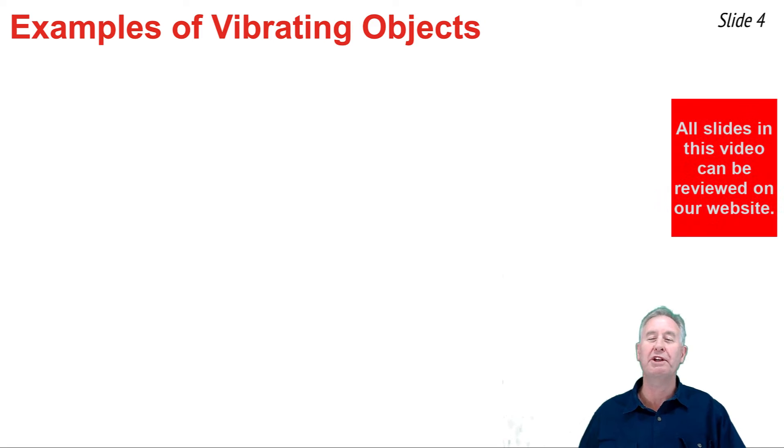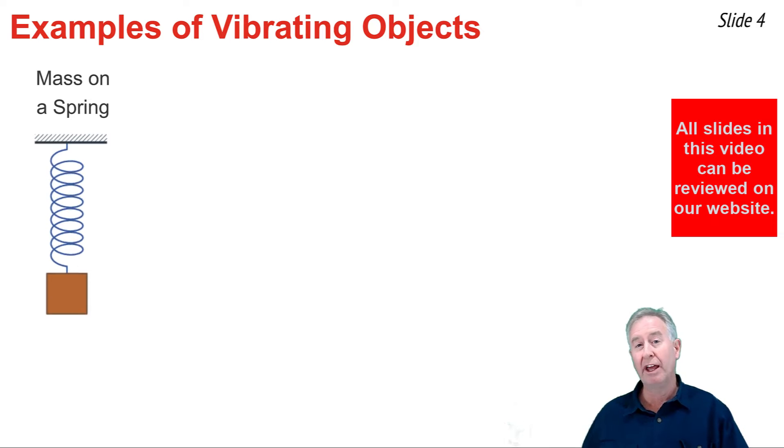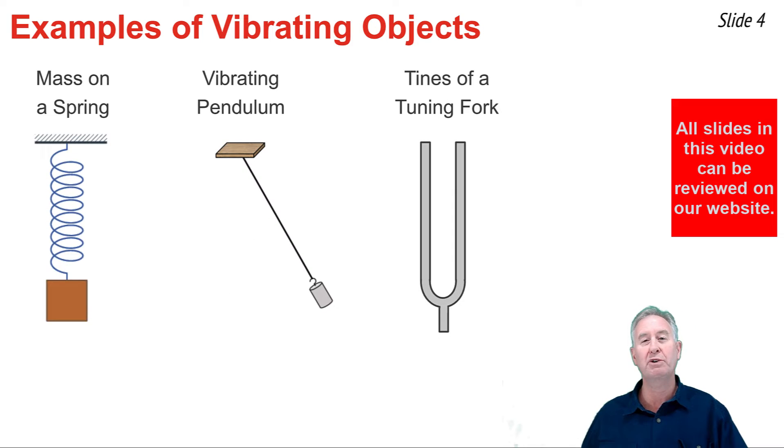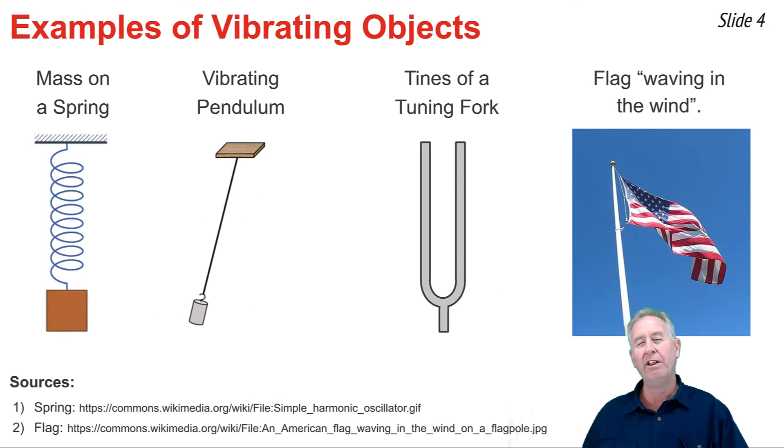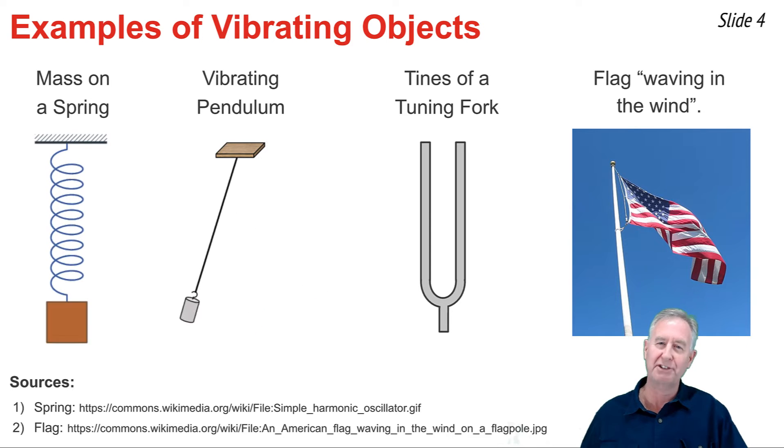A bobblehead doll is not the only example of a vibrating object. There's many objects that are set into vibrational motion once they're pushed, pulled, or somehow disturbed. A mass on the end of the spring is one such example, as is a mass on the end of a spring known as a pendulum. We will give extensive treatment to these two types of motion in other videos in this tutorial series. The tines of a tuning fork will be set into vibrational motion if they're somehow struck or disturbed, as is the flag waving in the wind. All objects that undergo vibrational motion have one thing in common. The object is doing the back and forth, vibrating about a fixed position.